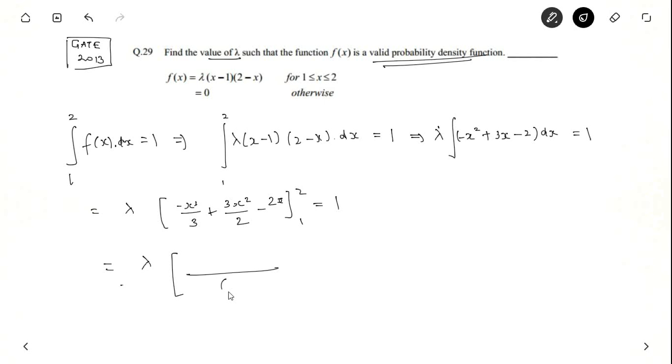You can take the LCM as 6, 3 into 2 is 6, minus 2x cube plus 9x squared, minus 12x. If you put 2 and 1 here, you will get the value of lambda as 6. So, the answer is 6. The value of lambda is 6 for the function f of x to be a valid probability density function.